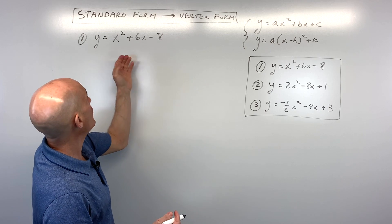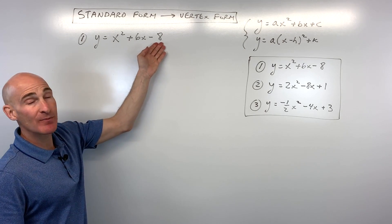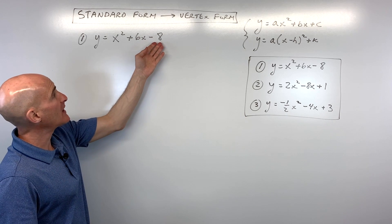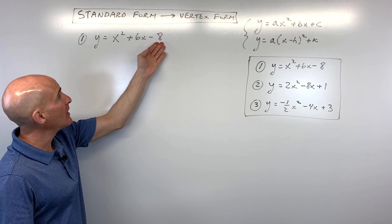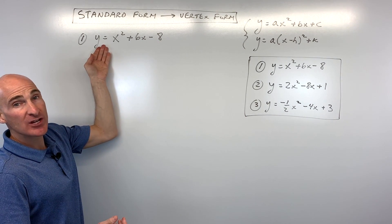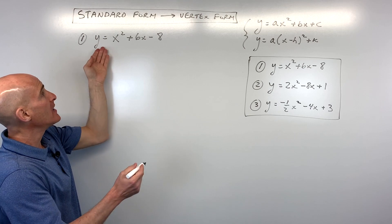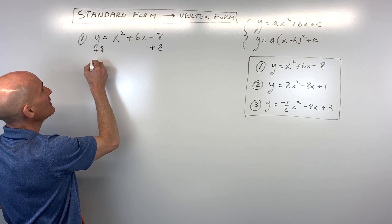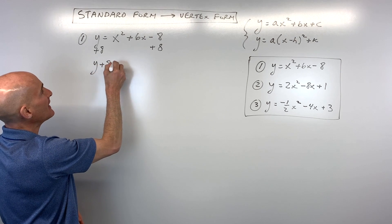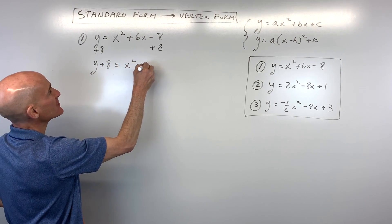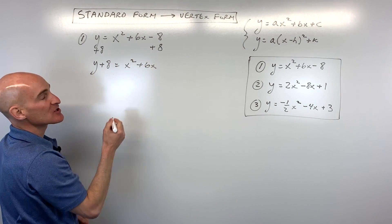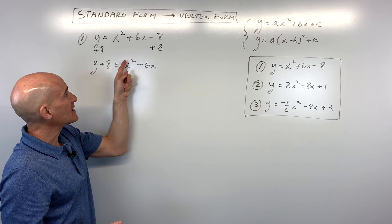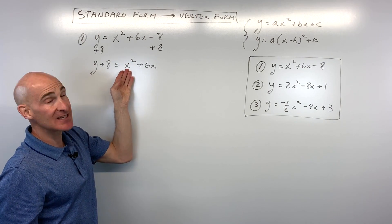Let's start off with the first one: y equals x squared plus 6x minus 8. The first step is you want to get that constant on the other side of the equation with the y. So we're going to add 8 to both sides, giving us y plus 8 equals x squared plus 6x. When you complete the square, it's easier if the leading coefficient in front of x squared is 1, and in this case it is.